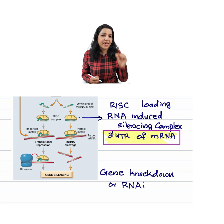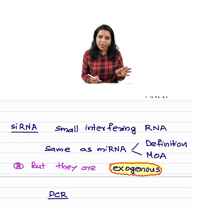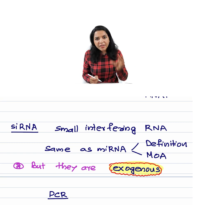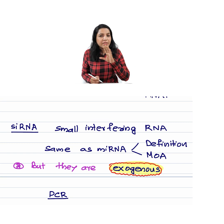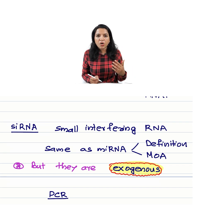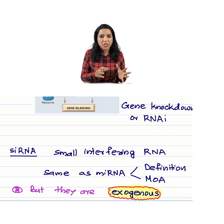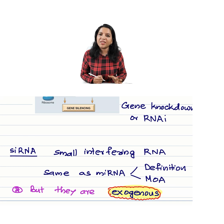What is siRNA? siRNA stands for small interfering RNA. In terms of definition and mechanism of action, it is the same as miRNA — it has RISC loading, it combines with the 3' untranslated region of mRNA, and the end result is gene knockdown. The key difference is that siRNAs are not endogenously produced; they are exogenous.